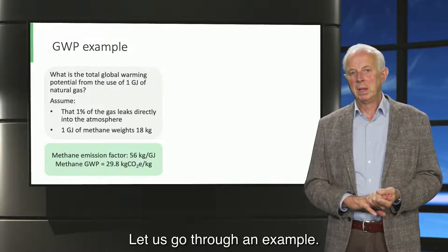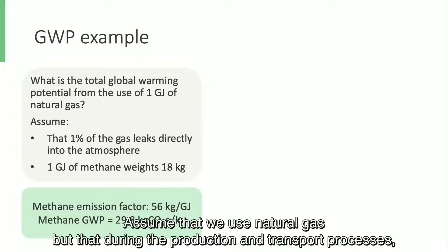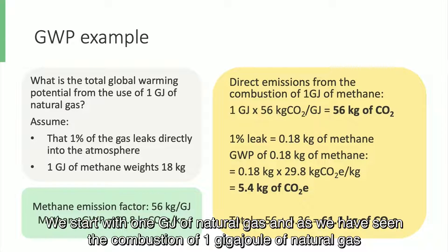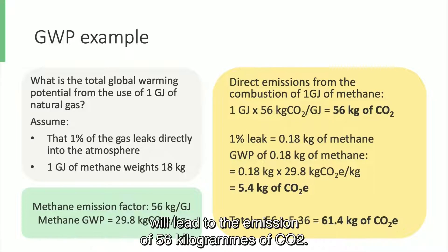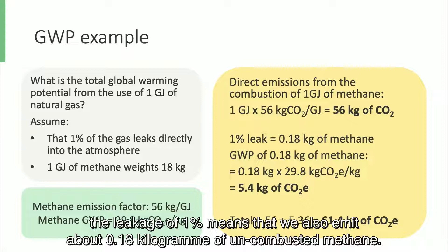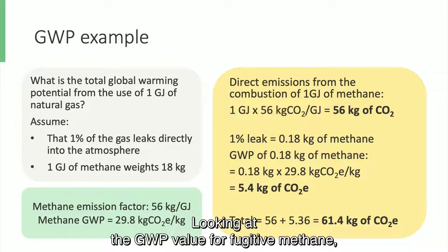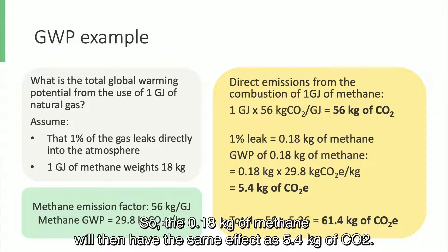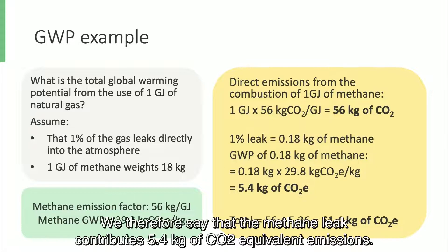Let us go through an example. Assume that we use natural gas, but that during the production and transport processes, 1% of natural gas is leaking. We start with 1 gigajoule of natural gas, and the combustion of 1 gigajoule of natural gas will lead to the emissions of 56 kilograms of CO2. Considering that 1 gigajoule of natural gas weighs about 18 kilograms, the leakage of 1% means that we also emit 0.18 kilograms of uncombusted methane. Looking at the GWP value for fossil methane, we can see that 1 kilogram of methane emissions has the same effect as 29.8 kilograms of CO2 emissions. So the 0.18 kilograms of methane will then have the same effect as 5.4 kilograms of CO2. We therefore say that the methane leak contributes 5.4 kilograms of CO2-equivalent emissions.